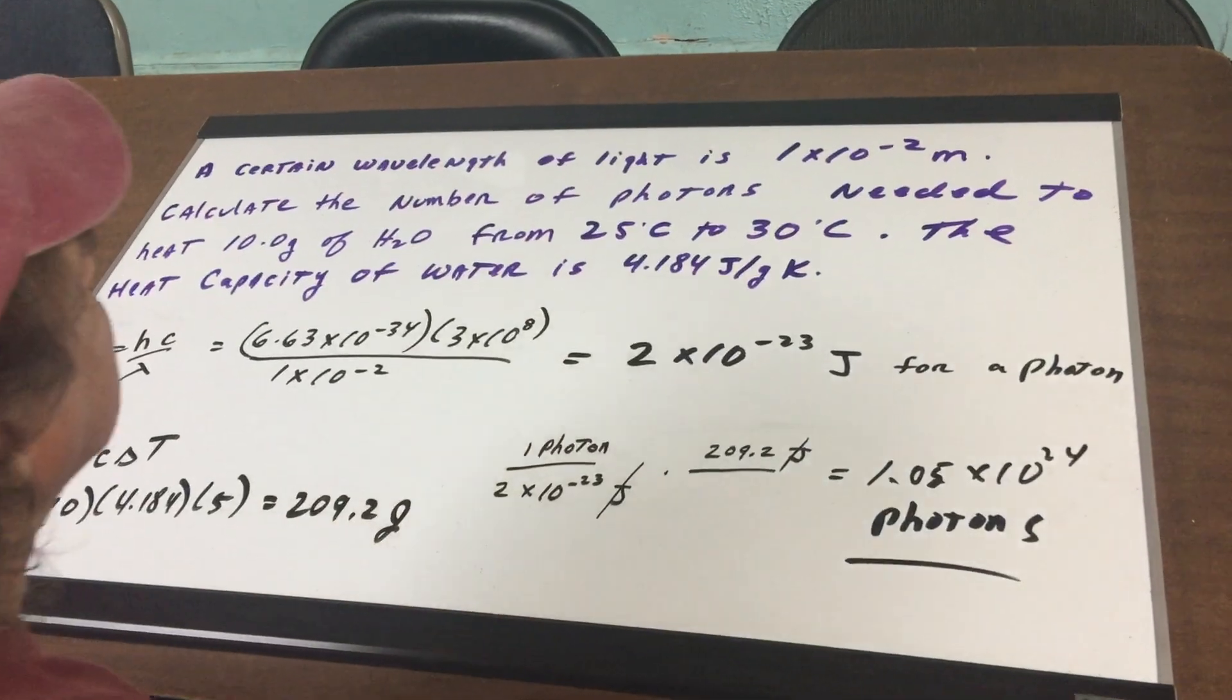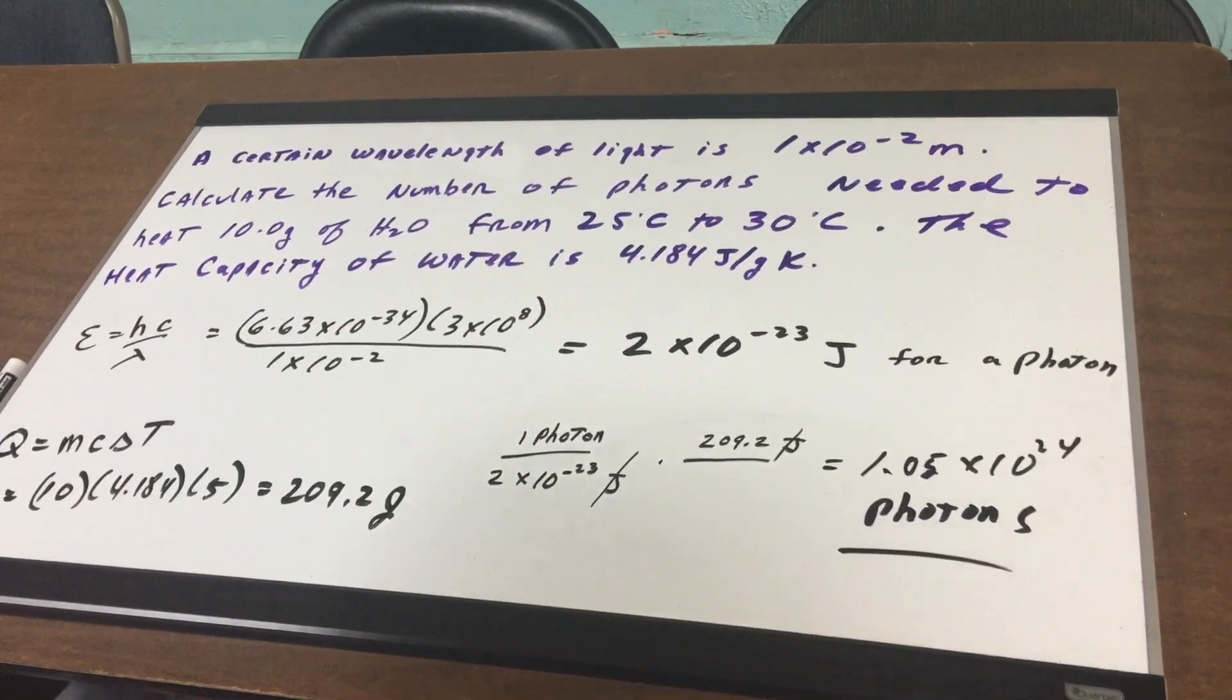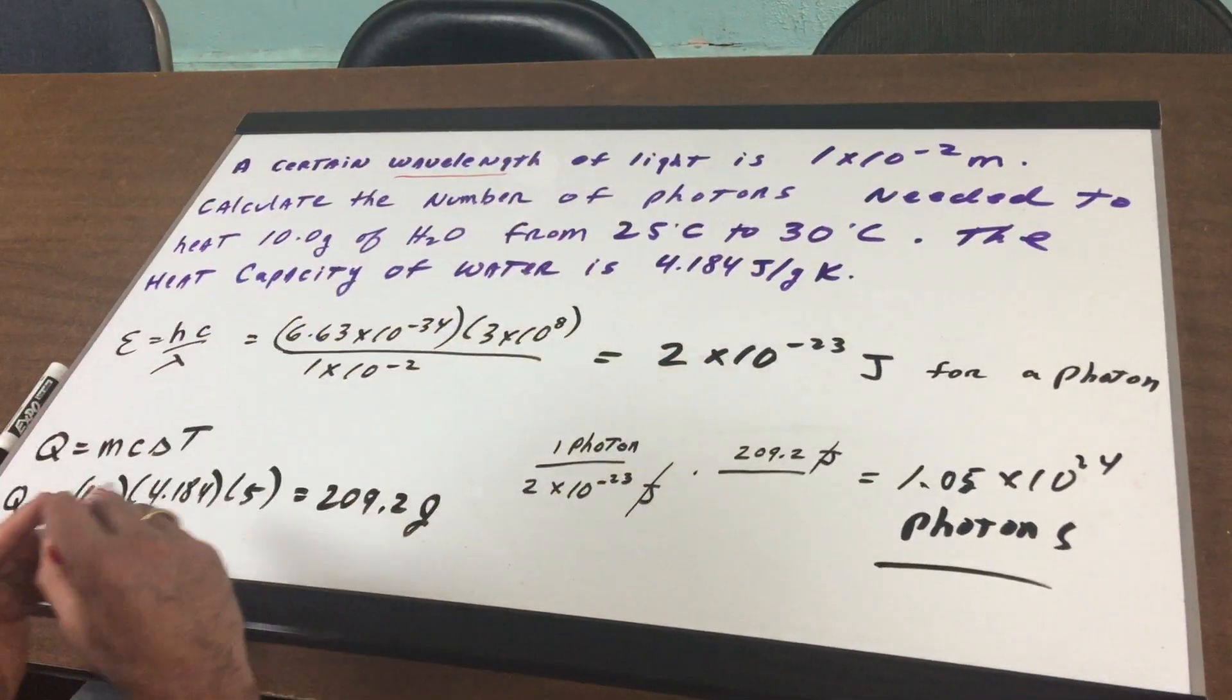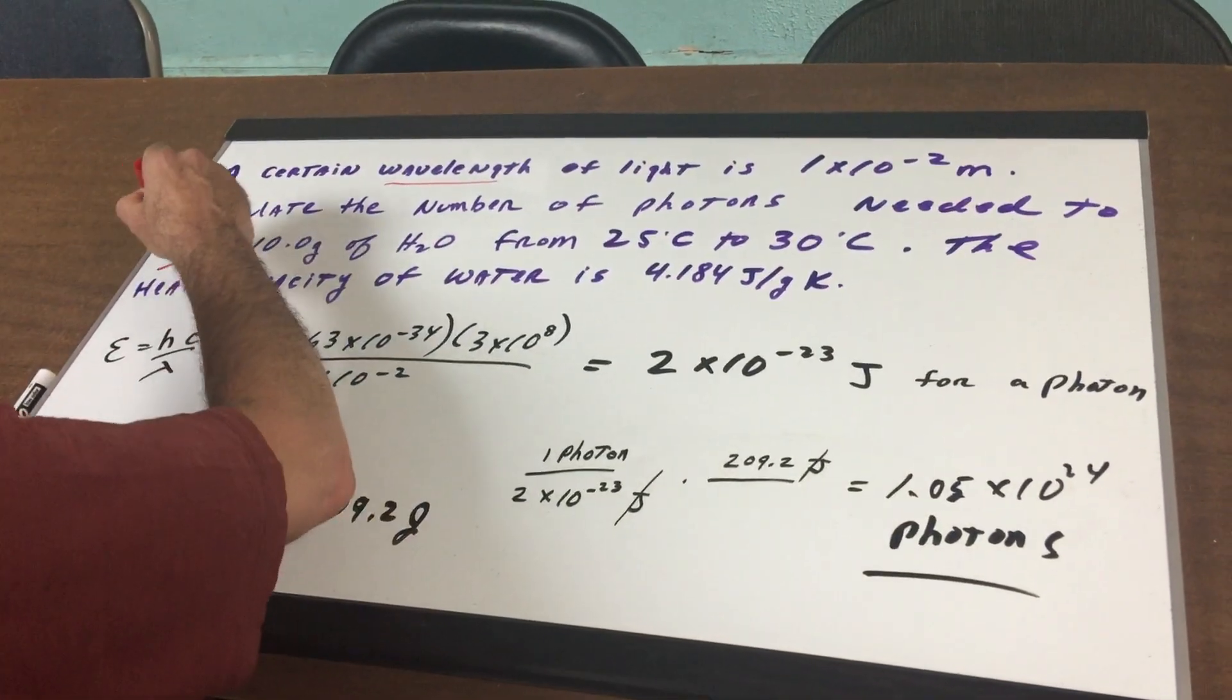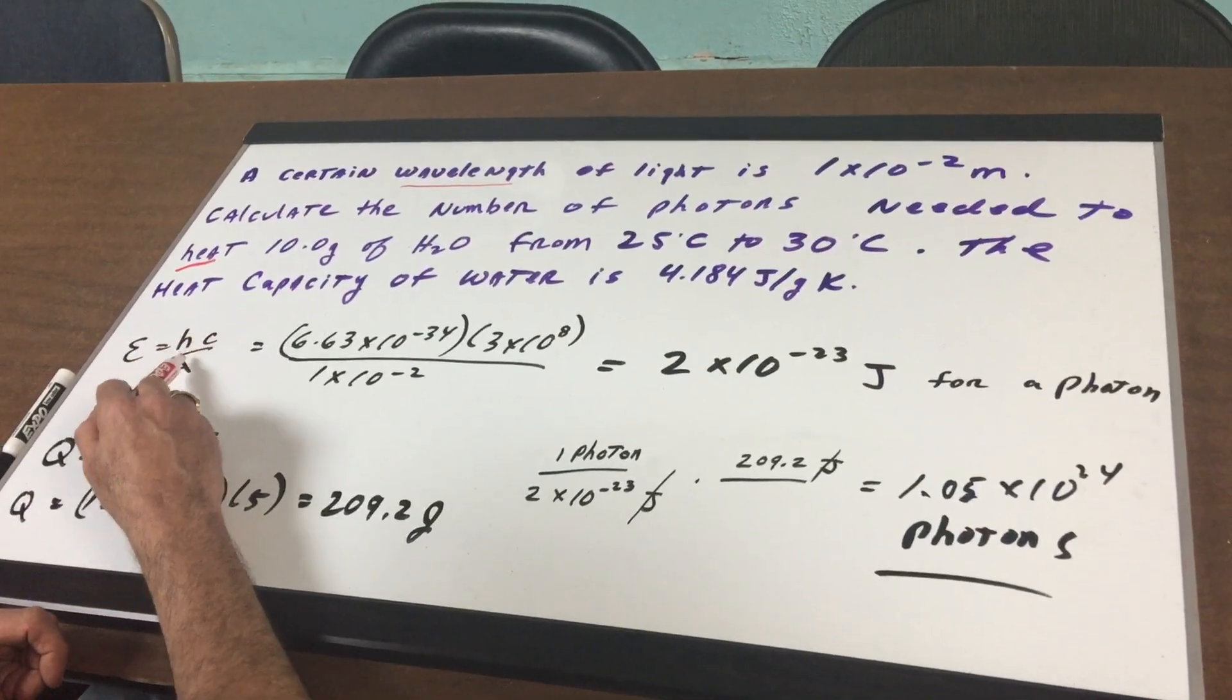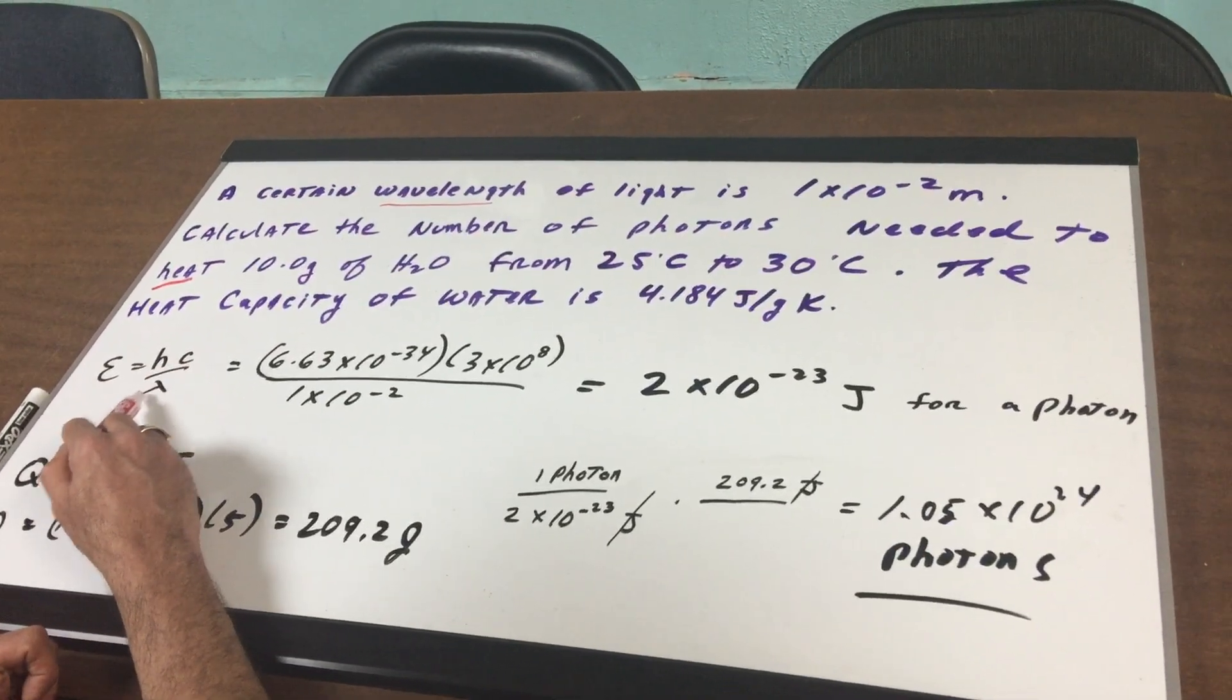The heat capacity of the water is given as 4.184 joules per gram Kelvin. Now, the first thing I'm going to do here is I see the word wavelength and I'm asking for what's the needed heat. Now heat is energy. So my first move is to use the formula E equals HC lambda, where H is Planck's constant, C is the speed of light, and there's the wavelength in meters.